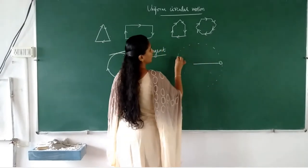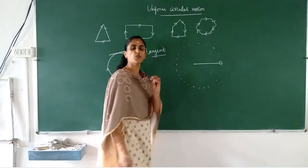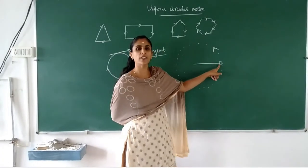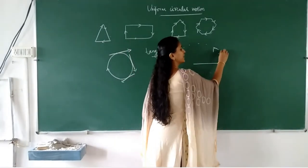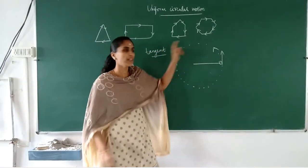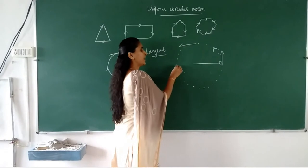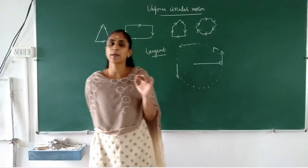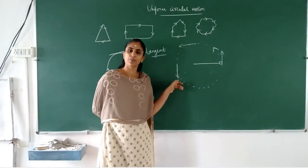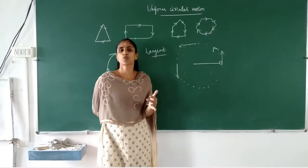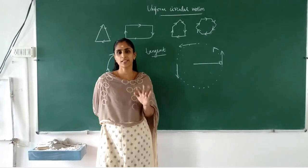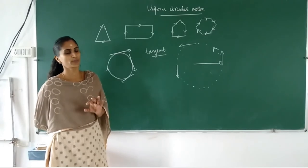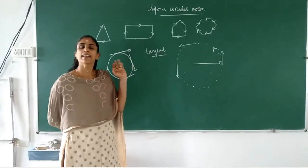For example, if you take a thread with a stone at the end and rotate it — either clockwise or anticlockwise — once you release it at any point, it will move in a straight line in the direction of the tangent at that point. So the direction of motion in uniform circular motion — the direction of velocity — is always along the tangent. A tangent is the straight line which touches the circle at a single point.